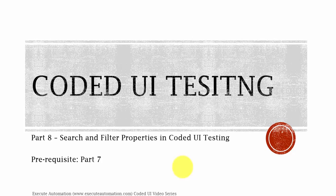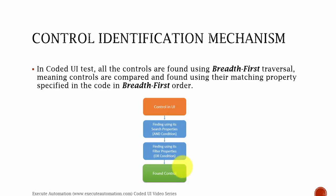What are search and filter properties in Coded UI testing? How does Coded UI testing actually identify objects or controls in the application's UI? In Coded UI testing, all the controls are found using breadth-first traversal, meaning the controls are compared and found using their matching property specified in the code in breadth-first order.